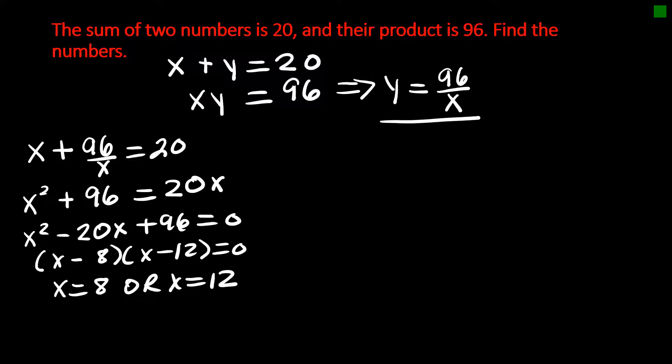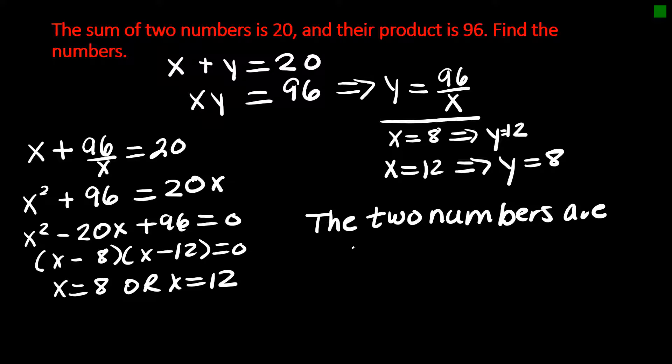So now let's go back and let's figure out y. If x is 8, then y is going to be 96 divided by 8, which is 12. And if x is 12, y is going to be 96 divided by 12, which is 8. So in either situation, the two numbers are 8 and 12.